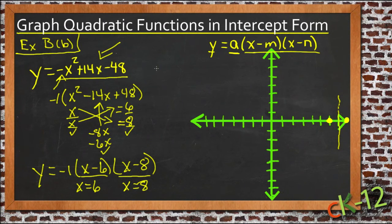and we'll get negative 7 squared plus 14 times 7 minus 48. 7 squared is 49, so we have negative 49,